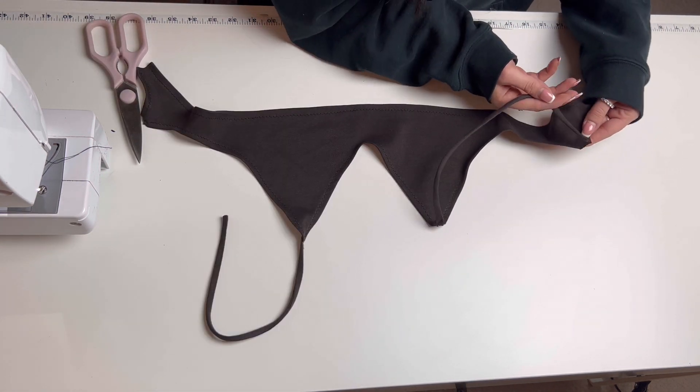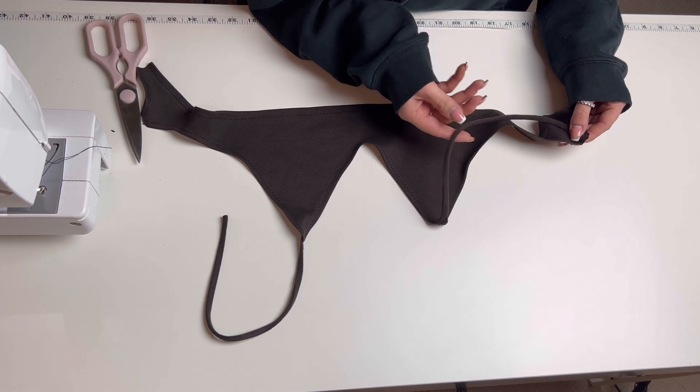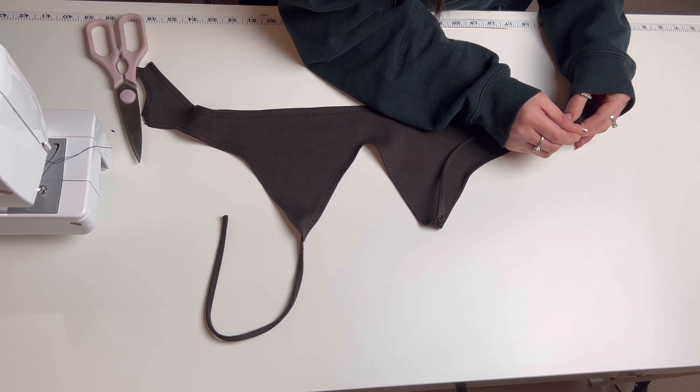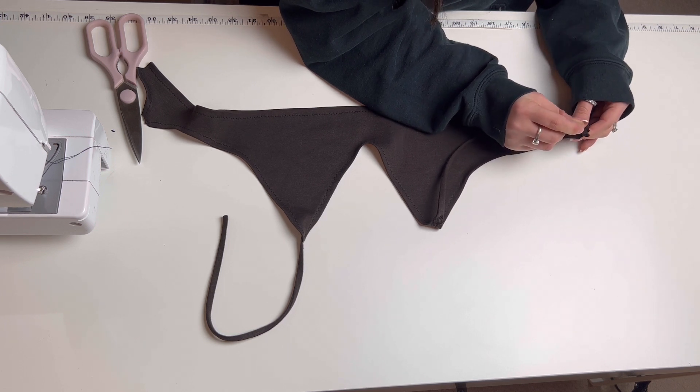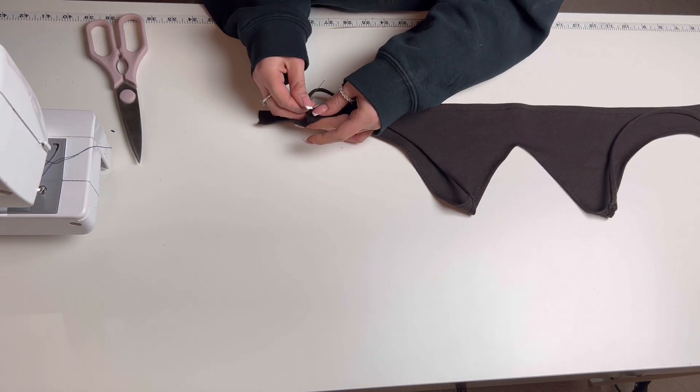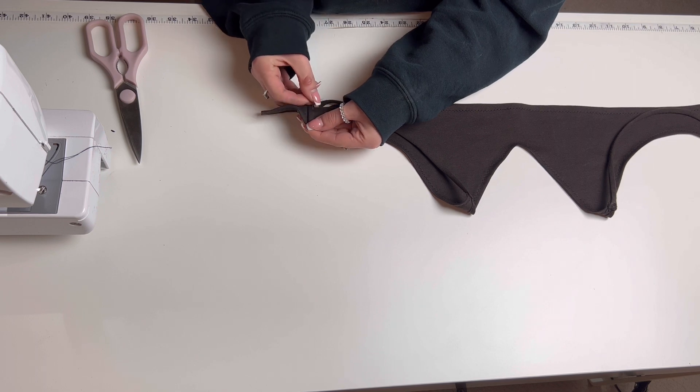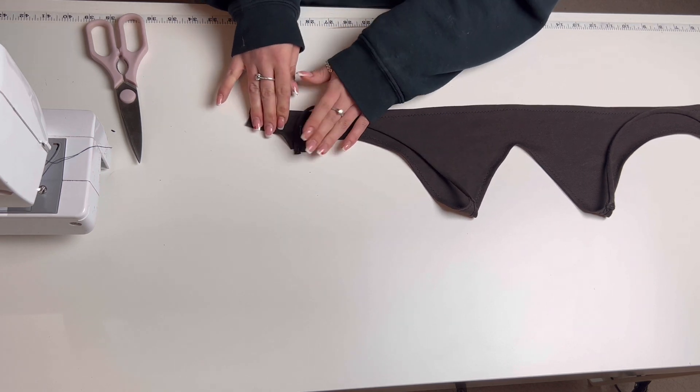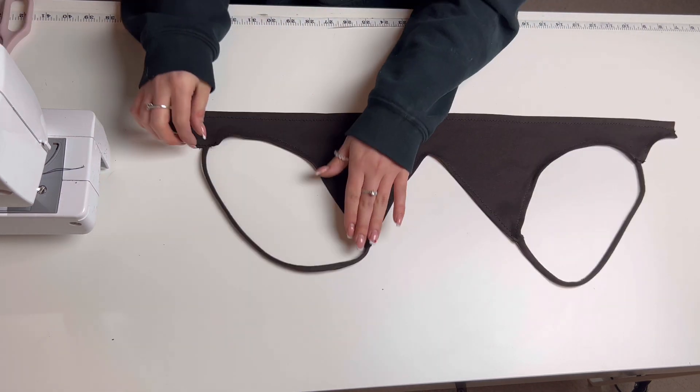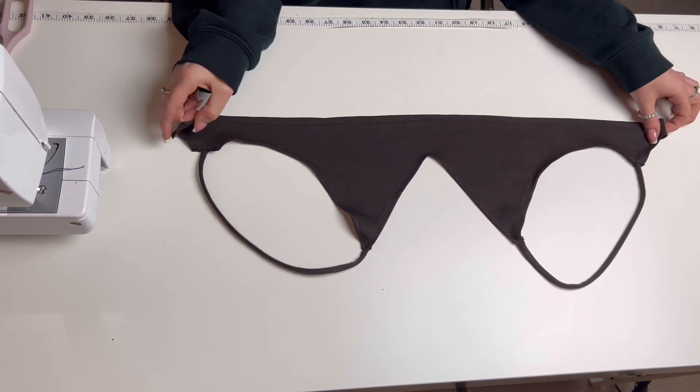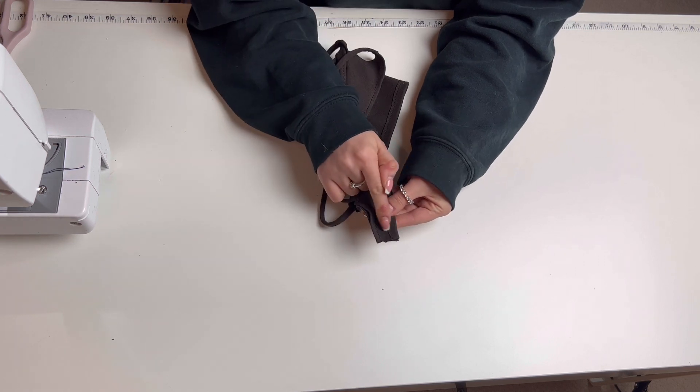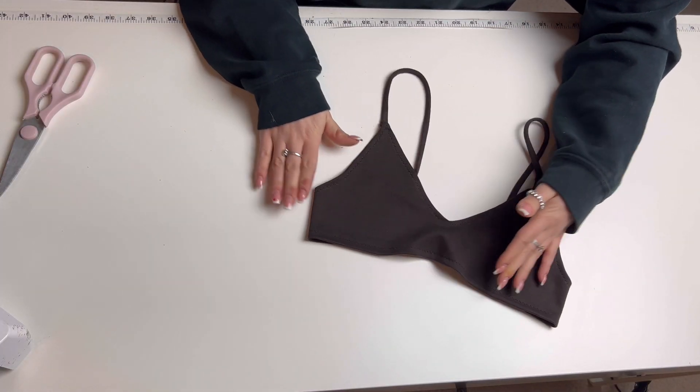Now take the other end of your strap to the opening that we left and pin them down as you see me do here. Once you've sewn the other side of your straps down, it is time to finish your garment. So take the two end pieces and stitch them together. And just like that you have finished your bralette.